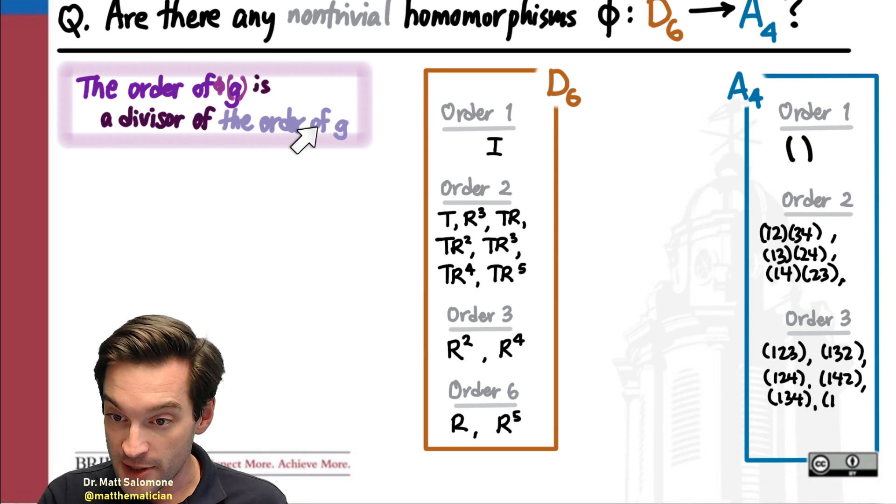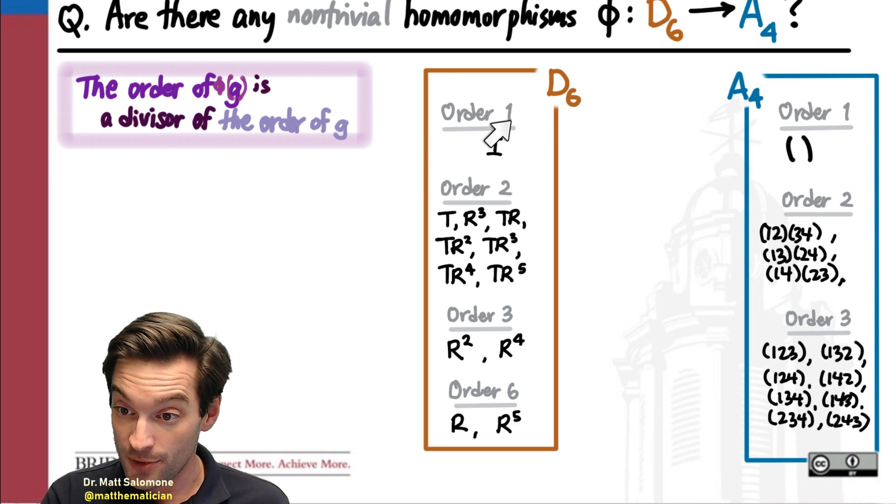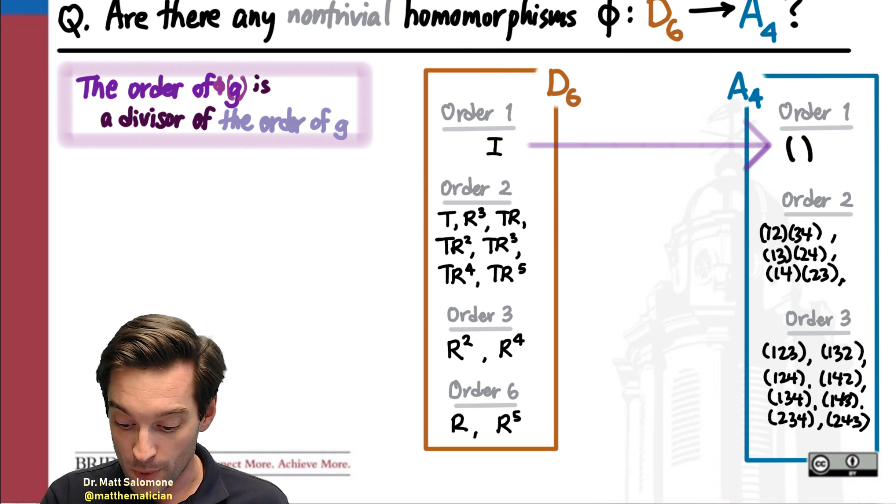And then once we know this, this fact over here tells me, for instance, that I have to send the identity element to the identity element, because the order of its image has to be a divisor of 1, and there's only one divisor of 1 to speak of. So 1's got to go to 1.